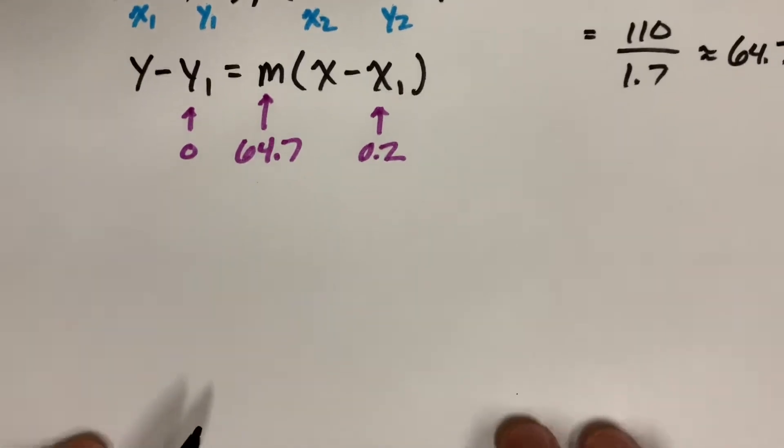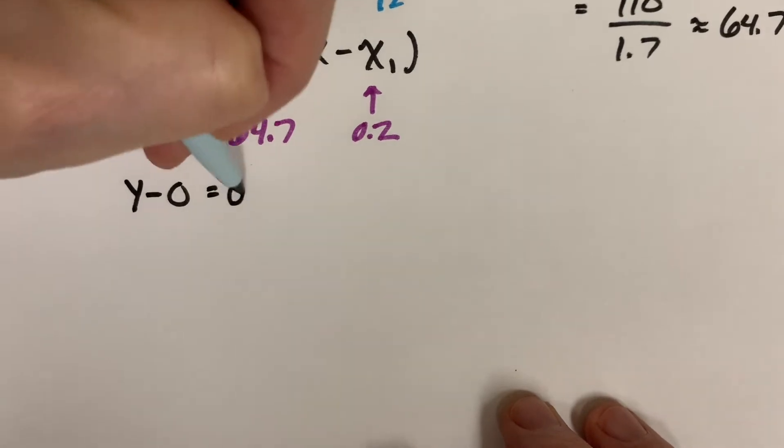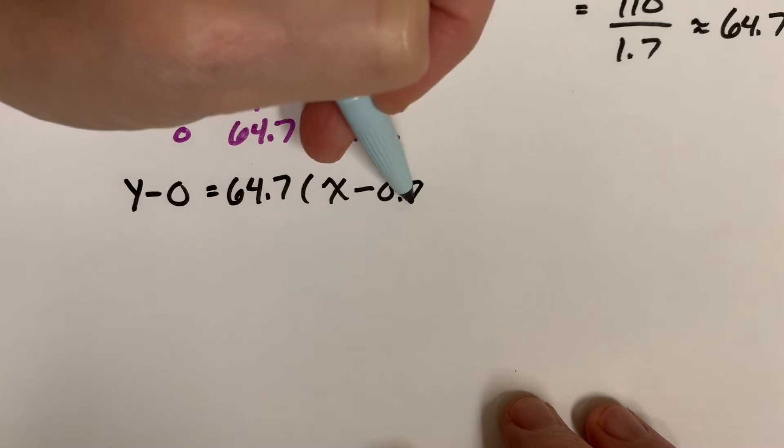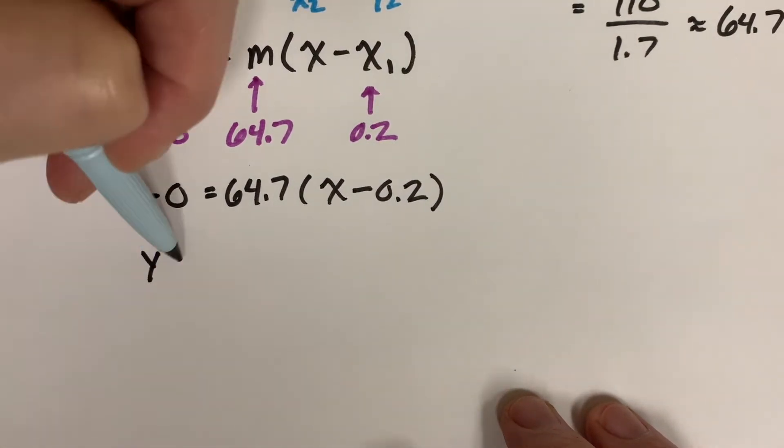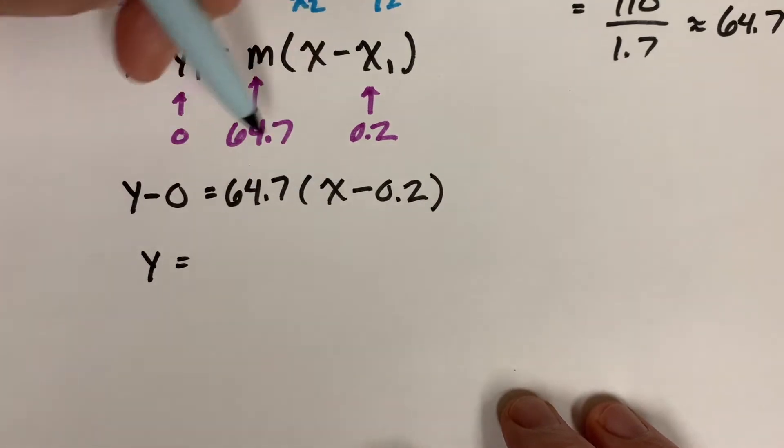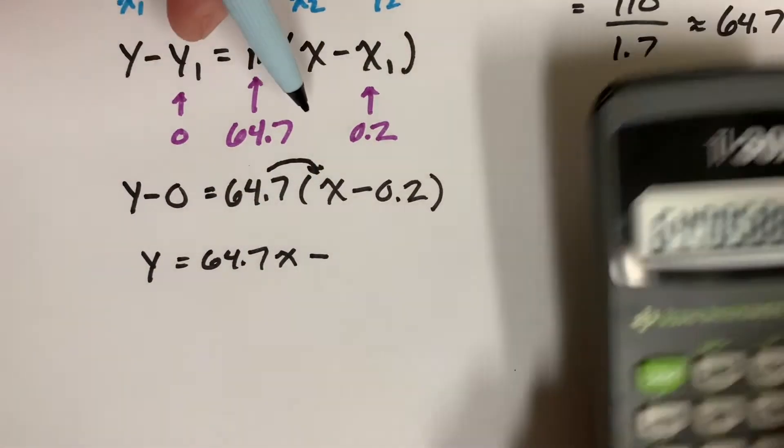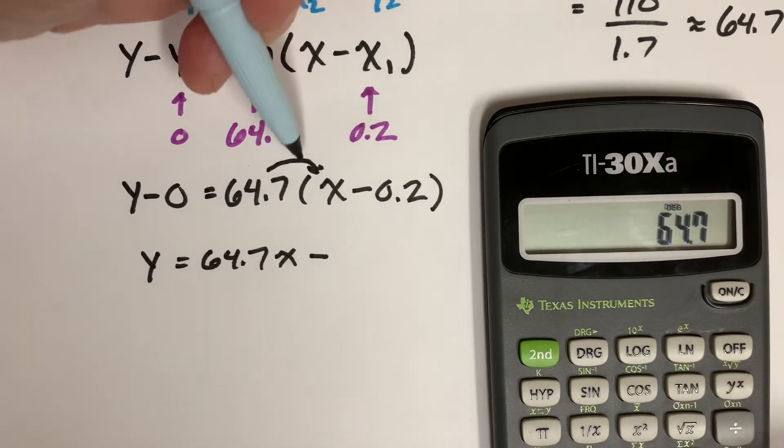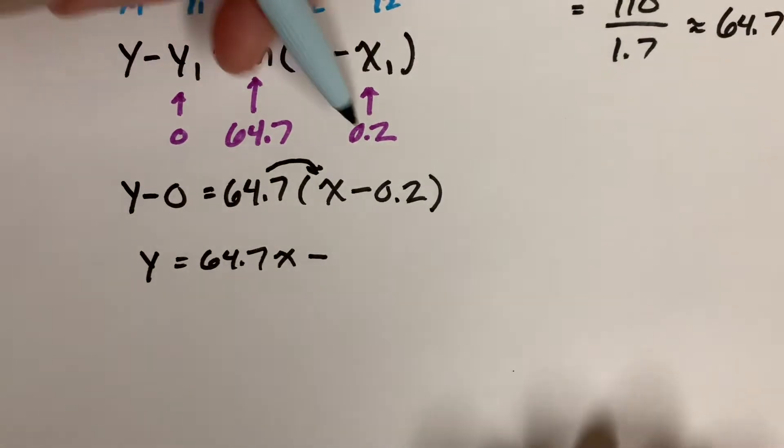We have y minus 0 equals 64.7 times x minus 0.2. So y minus 0 is obviously just y. The 64.7 when you distribute it is going to give you 64.7x minus, and now we have to do 64.7 times 0.2, and I get 12.94, and it's going to be negative.